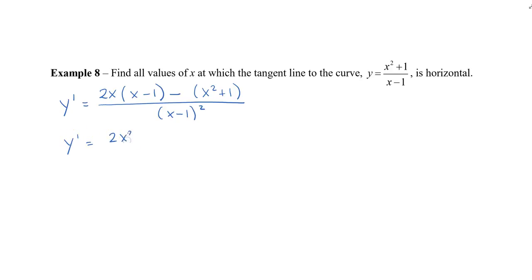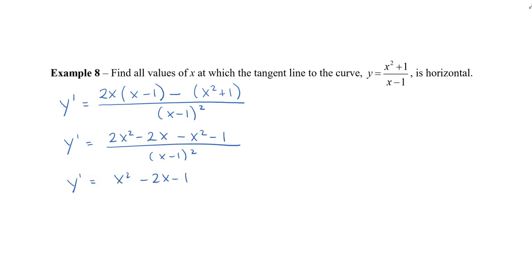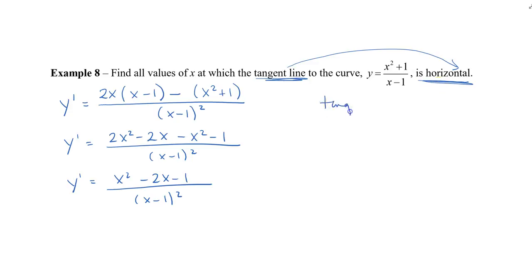Let's simplify this. Distributing, we get 2x squared minus 2x minus x squared minus 1. Combining like terms: 2x squared minus x squared is x squared minus 2x minus 1, all over (x minus 1) squared. Now, if the tangent line is horizontal, that means our slope must equal 0.